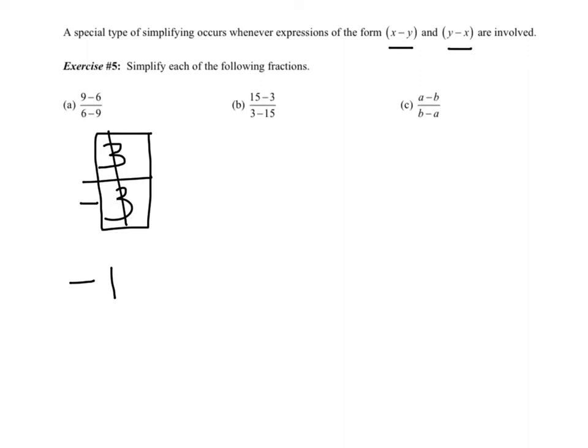Part B. 15 minus 3 is 12, and 3 minus 15 is negative 12. Again, the 12 divided by 12 cancel and make a 1, and I'm left with a negative 1. Again, they switch signs. 15 is positive, then negative. 3 is negative, then positive.